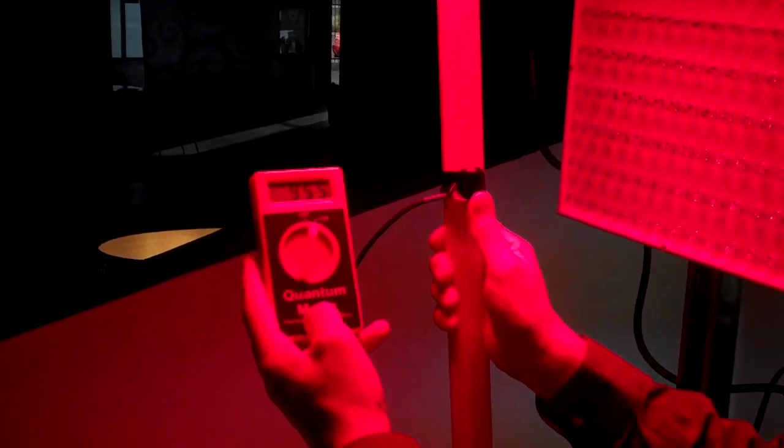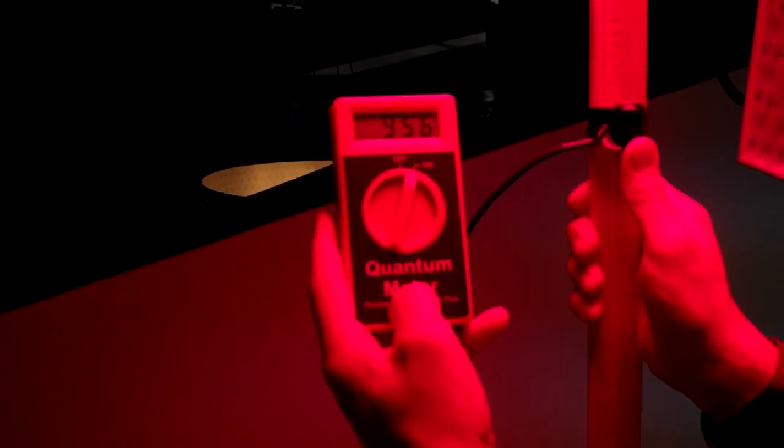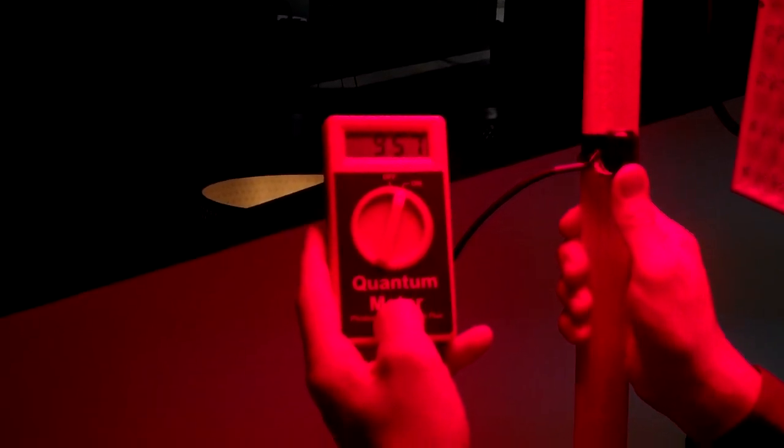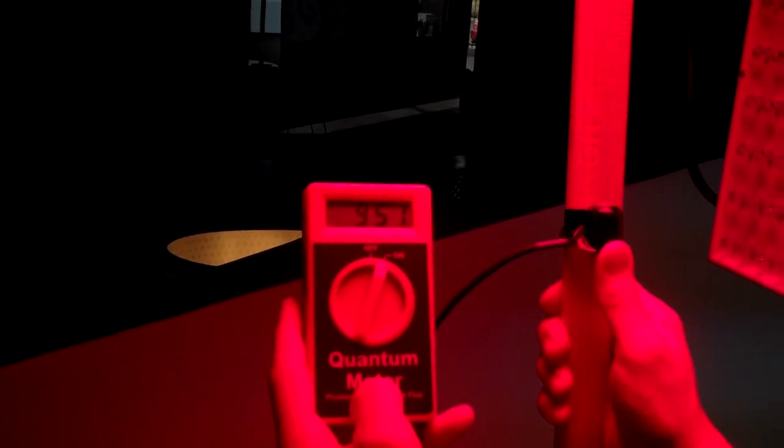Here we are measuring the Apache Tech light with a 955 meter reading of photosynthetic photon flux, which basically is the readings of the proper wavelength of creating photosynthesis for plants.